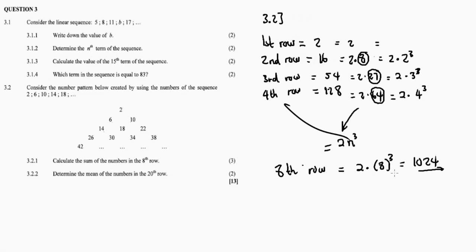Sometimes a pattern is not as obvious as a linear pattern, so you need to do a little bit of inspection. If the common difference doesn't work, try dividing by the lowest number. If the answers produce a pattern of perfect squares or perfect cubes, go with that. If division doesn't work, try something else — subtract, or try other operations.